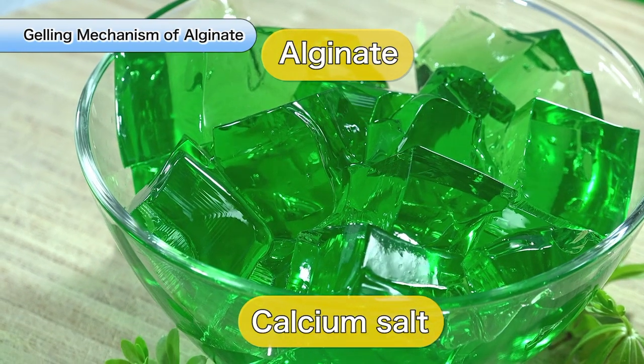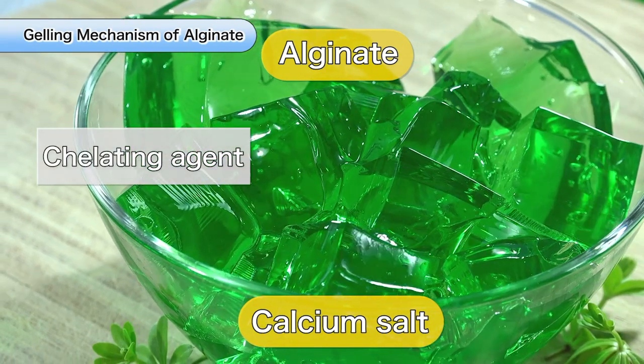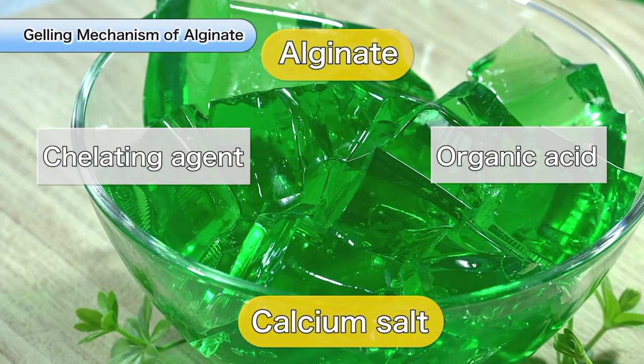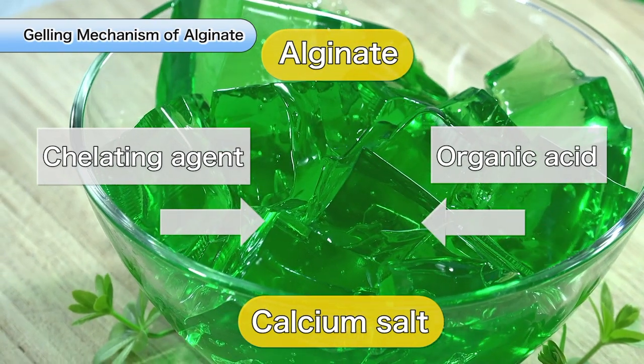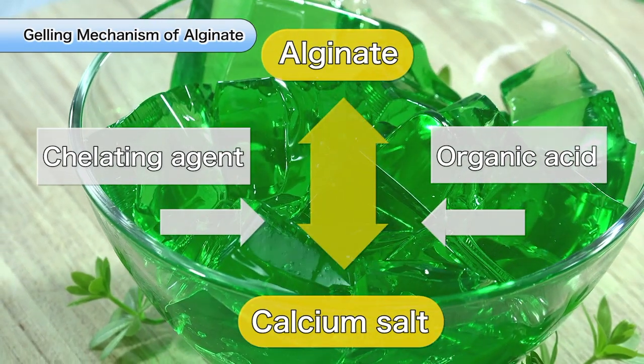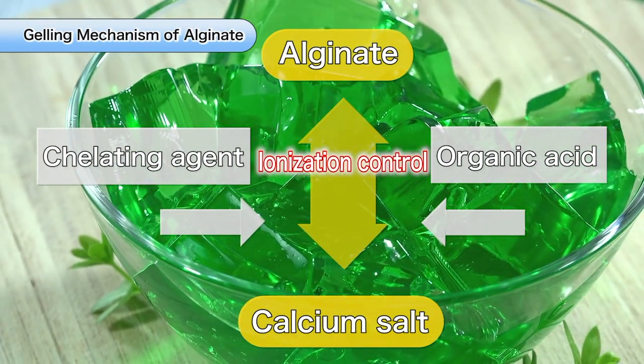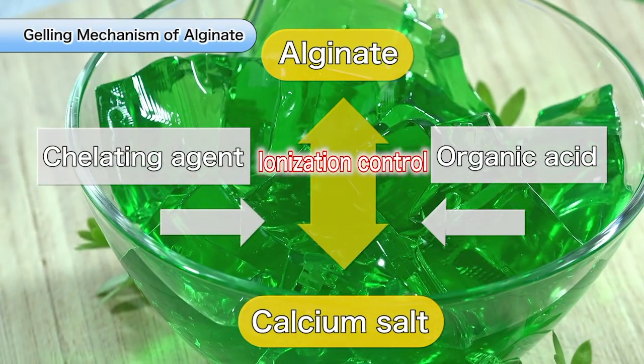Here, we see a calcium sequestering agent and a pH reduction agent. By varying the type and quantity of these two types of agents, the time required for gelation can be freely adjusted from as little as a few minutes to an overnight process.